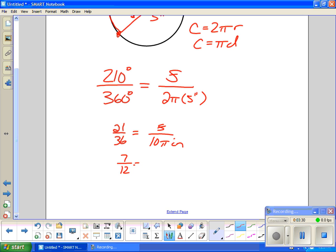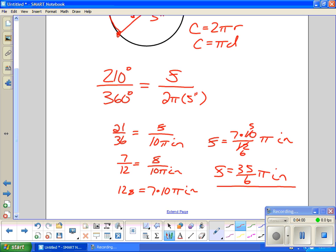Cross multiplying, 12S equals 7 times 10π inches. Divide both sides by 12. I like to leave this in terms of π. Since 12 and 10 have a common factor, the arc length is 35π/6 inches. And I've just found the arc length of this circle.